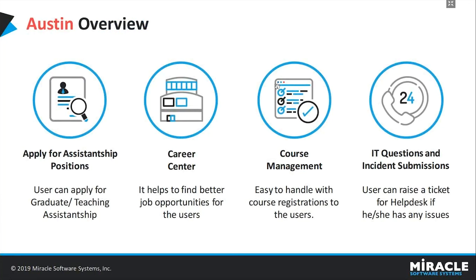Now let's discuss some key functionalities of Austin. By using Austin, we can apply for assistantship positions like graduate assistants or teaching assistants with simple dialogues with the help of NLP. Users can also find better job opportunities based on their preferences, find and register for courses available based on their requirements, and raise a ticket to help desk support if students are facing any issues with the facilities.